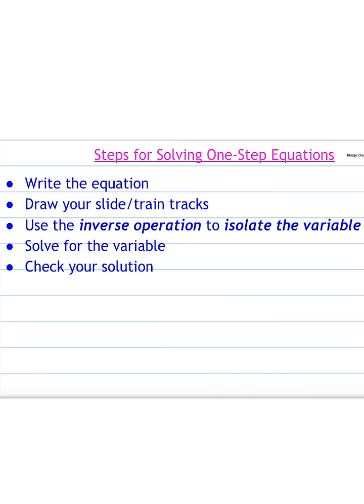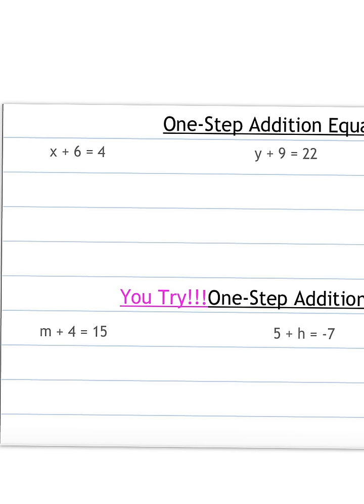Here are your steps for solving one-step equations. First, we write the equation. Then draw your slide, or the train tracks — we'll show you what that looks like. Use the inverse operation to isolate the variable — isolate means get the variable by itself. Then we solve for the variable, and then check your solution.